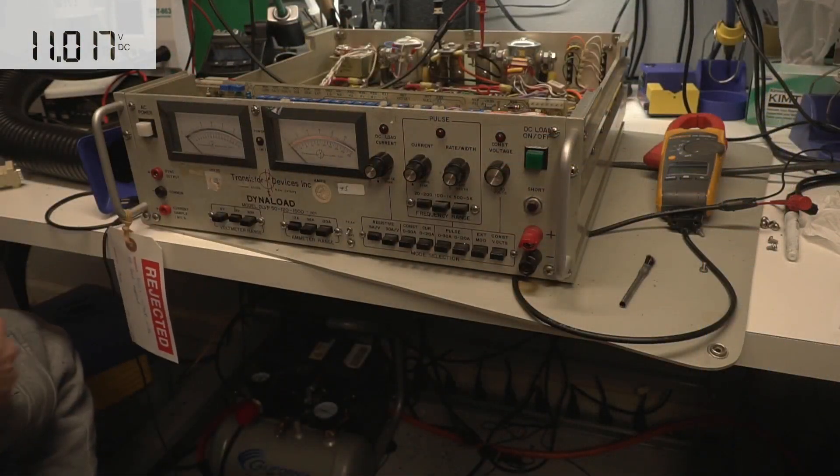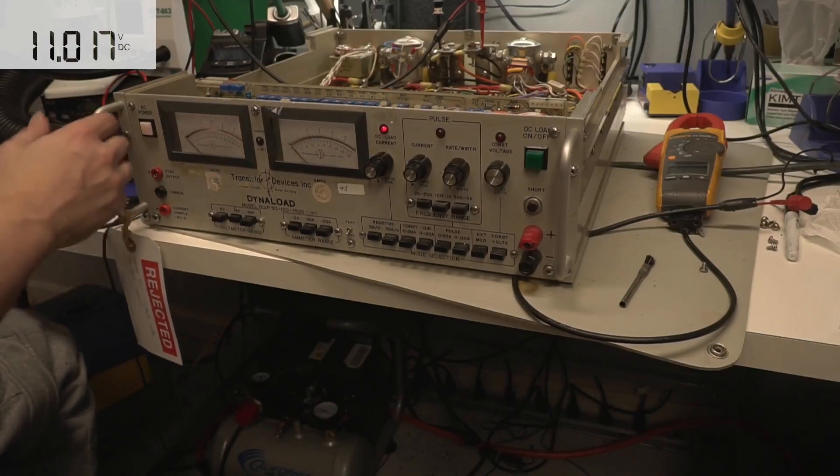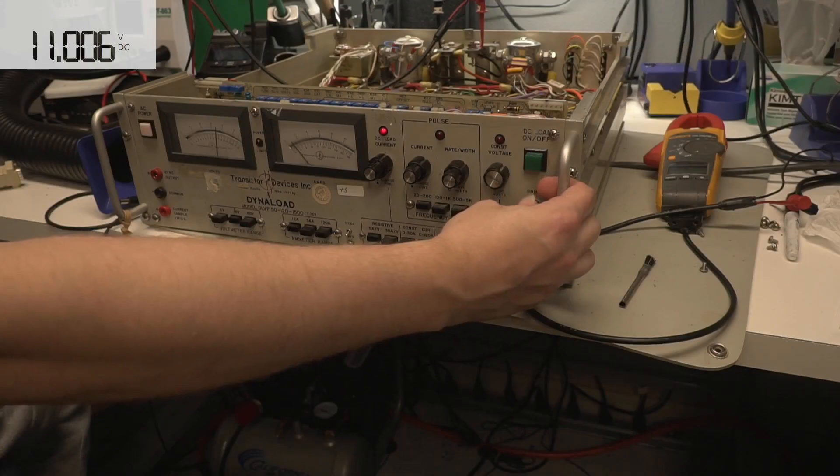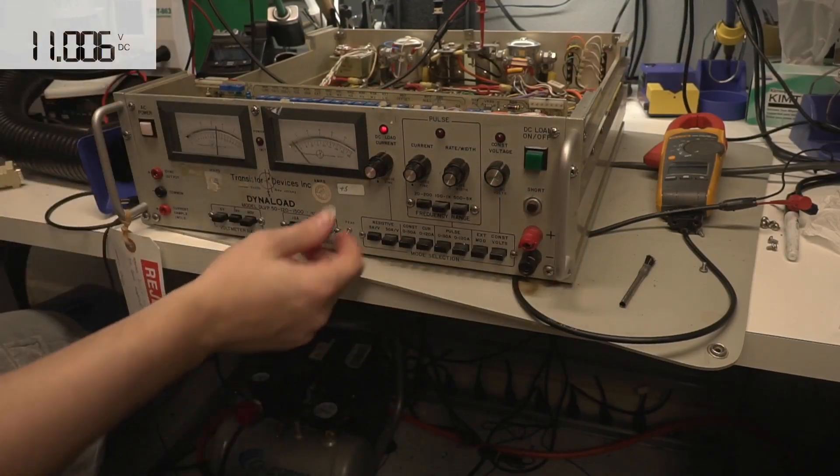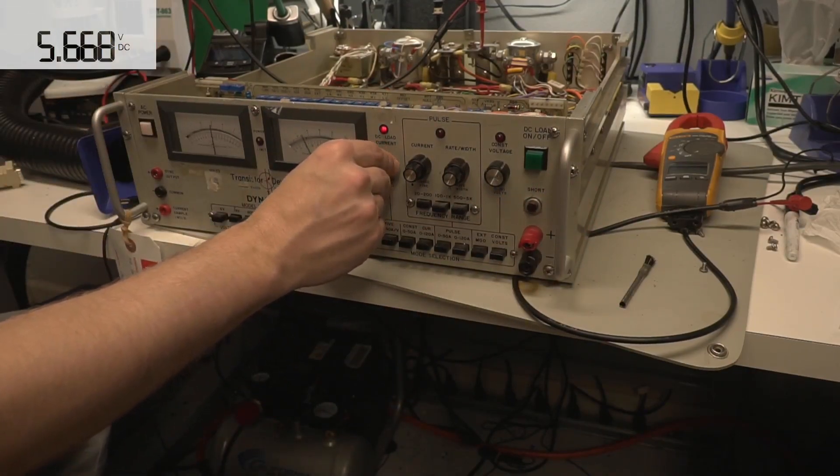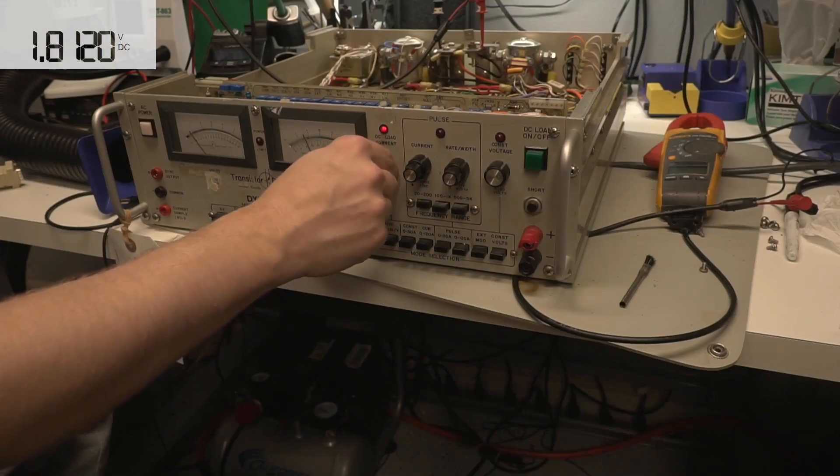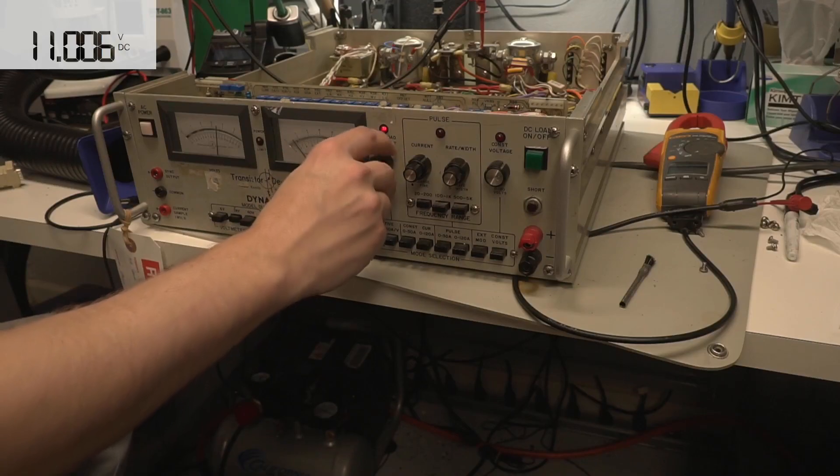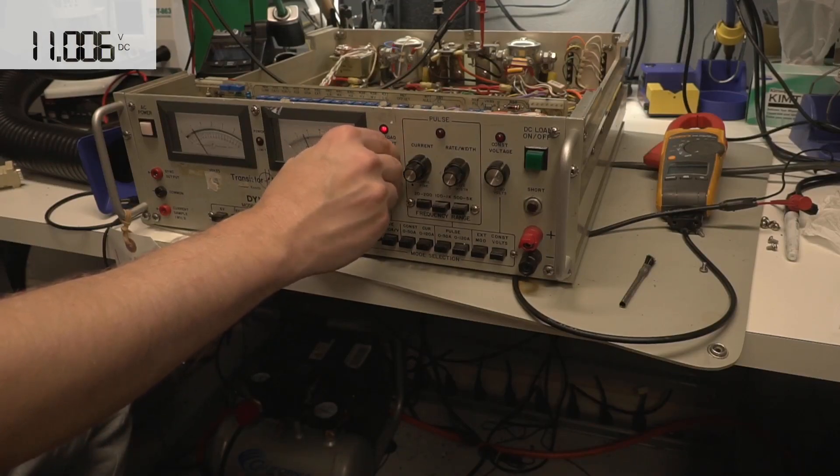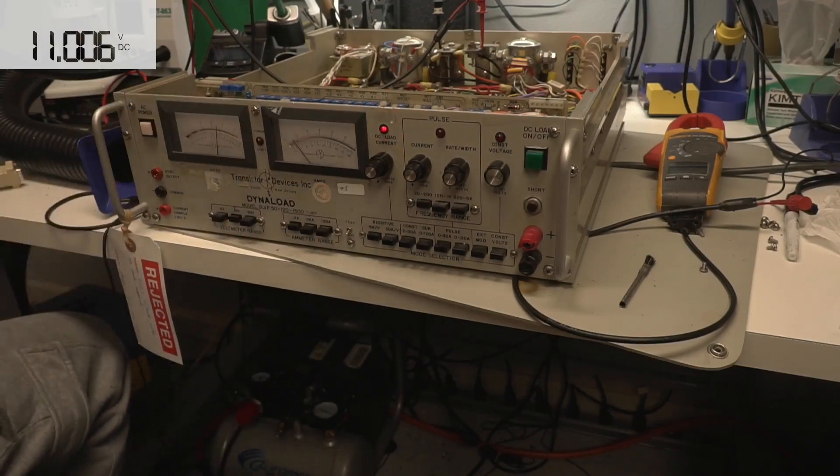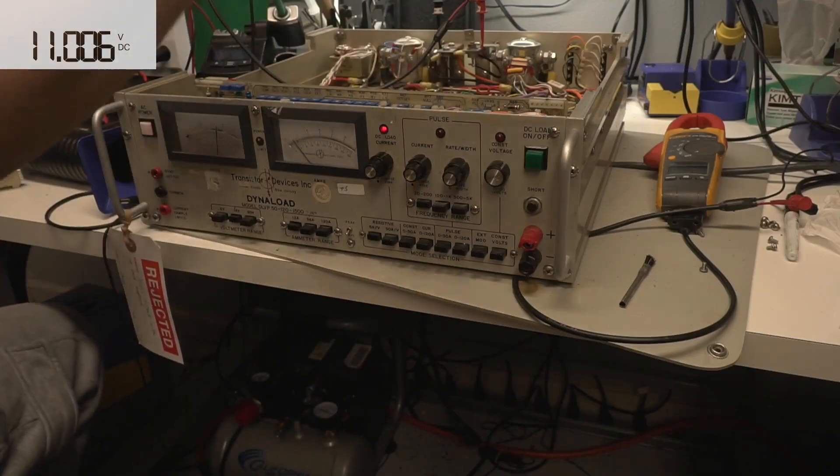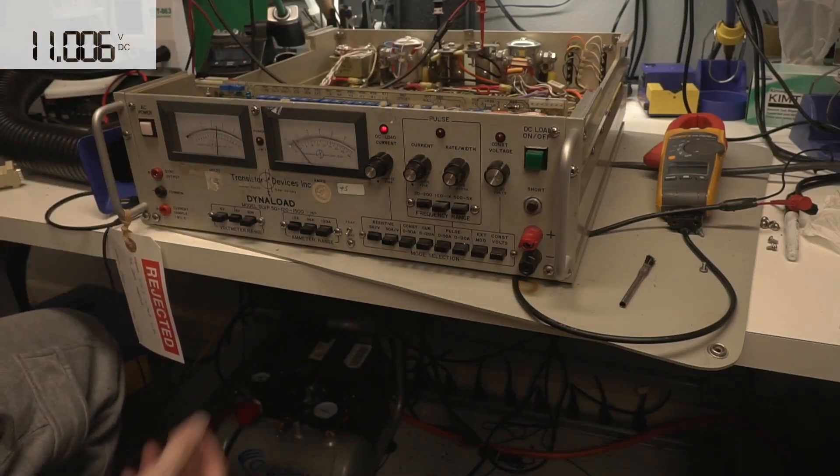All right, so let's go ahead and give it a little test here. So we'll turn it back on, turn the load on and turn up, yeah it looks like it's working now. Yep, that'll go all the way up. So yeah, that does appear to be working. So it looks like, yeah, corrosion either on the connectors or the op amps was our problem.